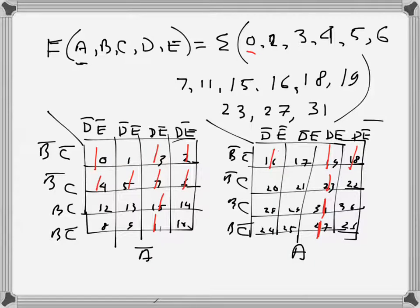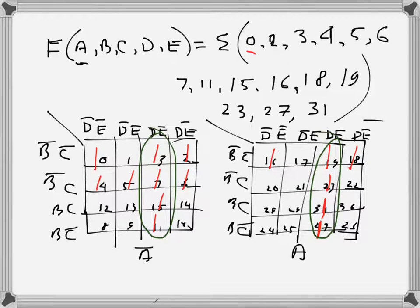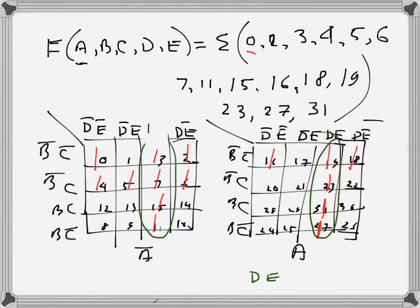Looking at the ones in both K-maps, I can see a very large group of eight cells common to both K-maps. Since this group spans both K-maps, there is no a variable in the expression. The columns that are covered correspond to de, so this group gives the term d·e.